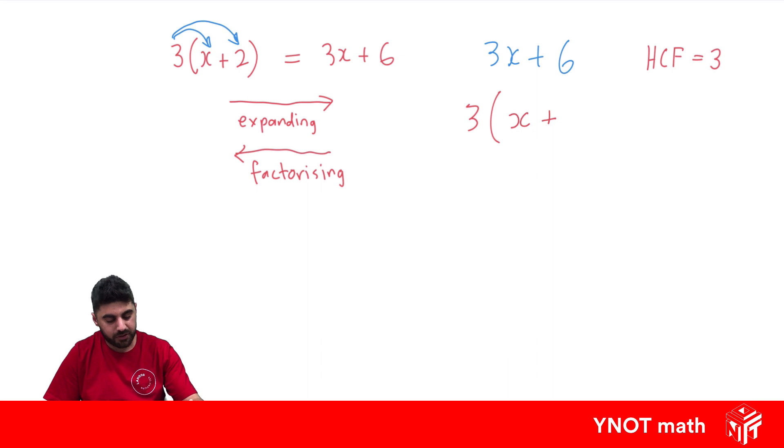What do we need to multiply by 3 to give us back to 6? Well, we need to multiply by 2. And you can see we've successfully factorized 3x plus 6 into its factorized form. Let's have a look at some more examples.